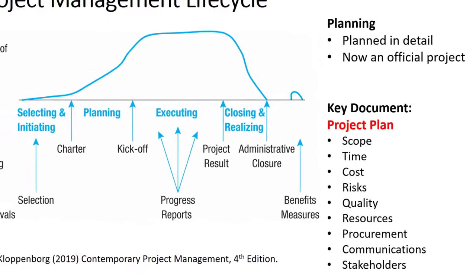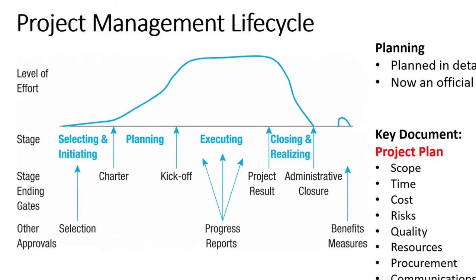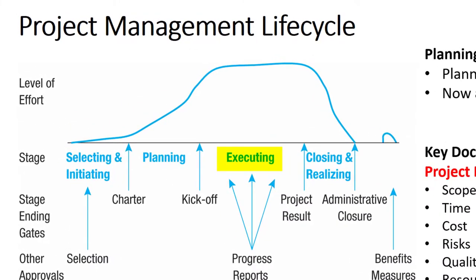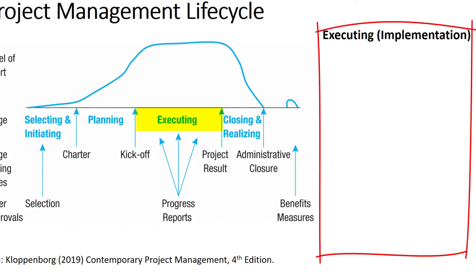Once the detailed project plan has been approved, it's time to implement or execute the project. At this point, there is usually a formal project kick-off meeting or communication which indicates the transition from planning to execution. Project execution can also be called implementation — this is where all of the work gets done. Before this were only planning tasks. The project manager and team will be following the project plan and checking that everything is progressing as it should.